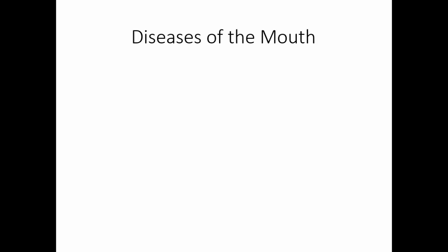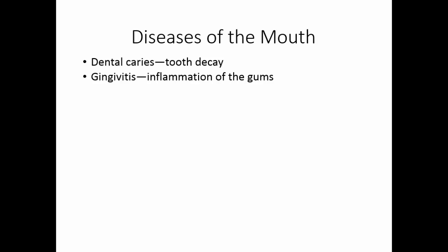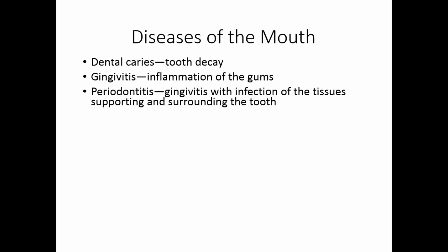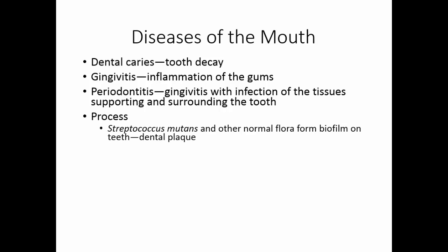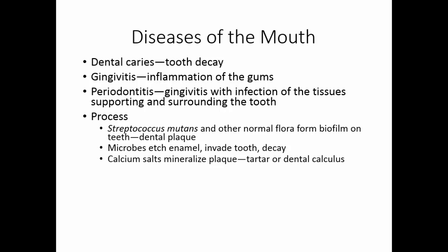The mouth is the entryway to the digestive system. Dental caries, or tooth decay, is one of its diseases. Gingivitis is an inflammation of the gums, and periodontitis is gingivitis with an infection of the tissues that support the tooth. All of these conditions negatively impact the tooth's function. Tooth decay starts when Streptococcus mutans and other normal flora form a biofilm called dental plaque on the teeth. Bacteria produce acids that etch the enamel, and if the enamel is breached, microorganisms can invade and decay the pulp. Calcium salts can then mineralize the plaque, forming tartar or dental calculus.